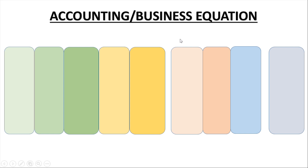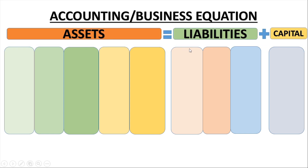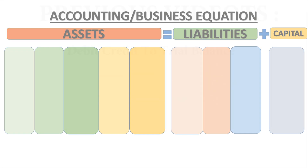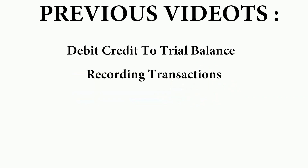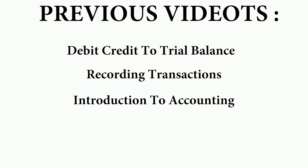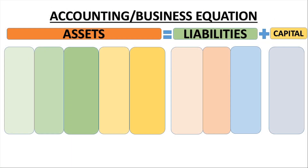The accounting equation is: Assets = Liabilities + Capital. Assets are all the things a business has. In my previous lectures I discussed in detail what assets, liabilities, and capital are. After every transaction, this equation is always true — assets are always equal to liabilities plus capital. We will prove this by practicing different transactions.